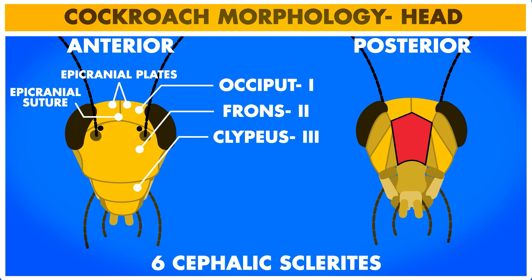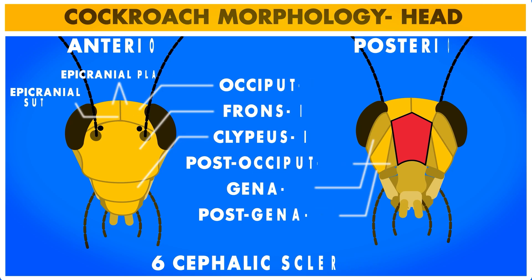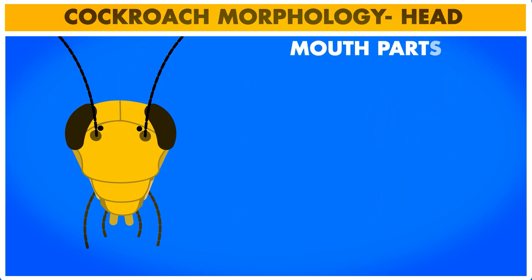The other three cephalic sclerites are found on the posterior part of the head. These are post-occiput, which is the fourth cephalic sclerite, and gena and post-gena being the fifth and sixth cephalic sclerites respectively. The mouth is downward facing and hence called a hypognathous mouth.